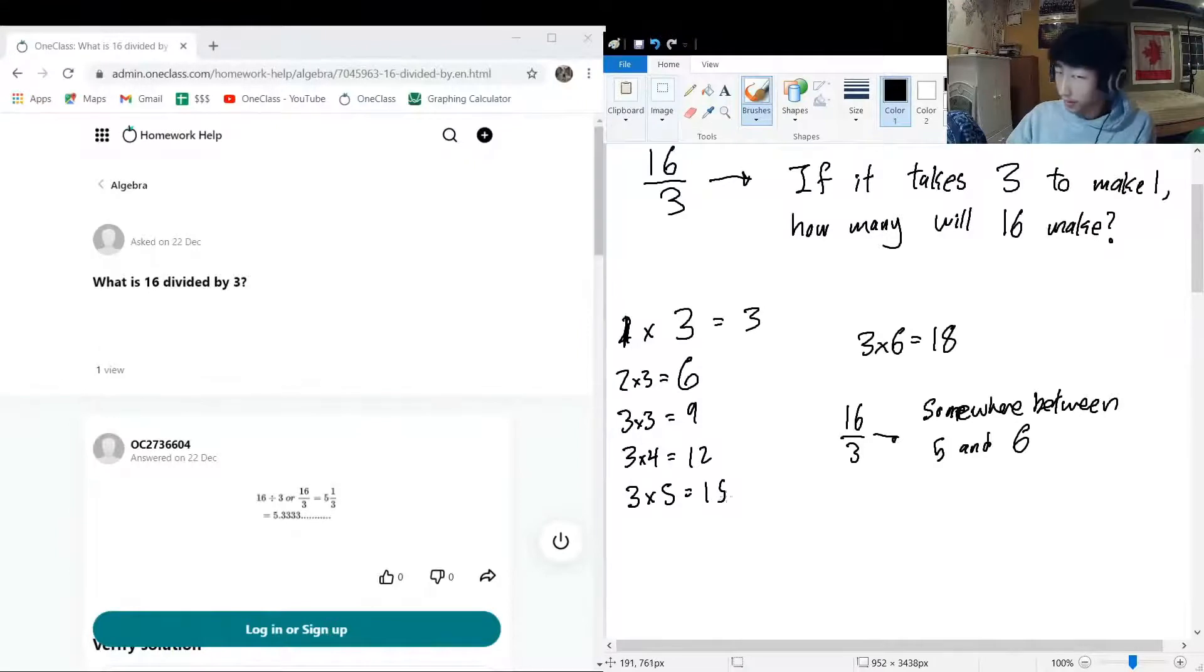I think 5 is a little bit closer. 15 is closer to 16 than 18 is. So if we do 5, we're going to have 15. But we're still going to have one third left, right? Because we have 16 thirds. If we have 15 thirds, that makes 5, but we're still going to have one third left. So 5 and one third.